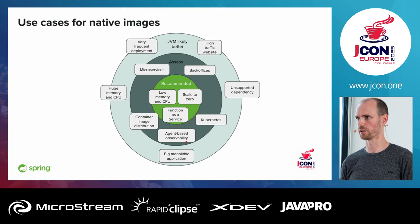If you use agent-based observability, you could run into trouble — sometimes it works, sometimes it doesn't. When is the JVM likely better? For high-traffic websites, the JIT compiler is a marvelous piece of technology and optimizes your application very nicely. The native image is not on par with the JIT compiler right now, but the GraalVM team is working on that. Also, if you've got an unsupported dependency — reflection, proxy, serialization, resource loading — and it's not supported, you either do the work to get it supported or you can't use native image.